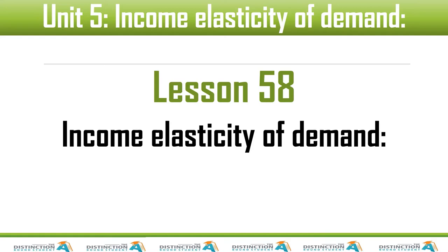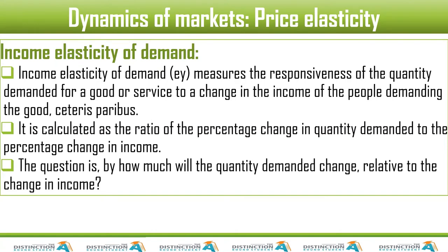Let's jump into Income Elasticity. We want to know if it shows us whether a good is a normal good or an inferior good. Income Elasticity of Demand measures the responsiveness of the quantity demanded for a good or service to a change in income of the people demanding it — ceteris paribus, meaning all other things equal.